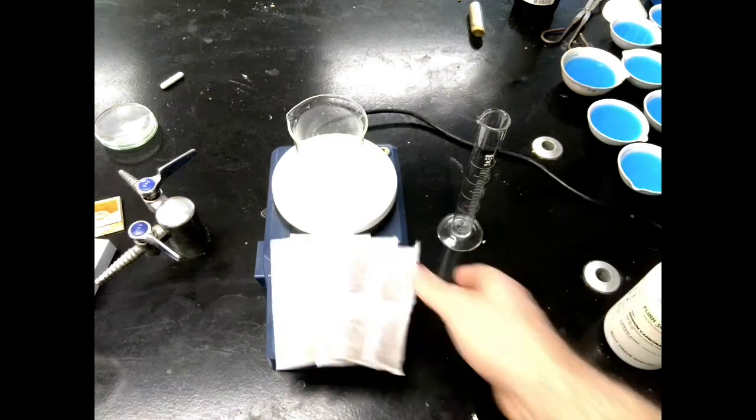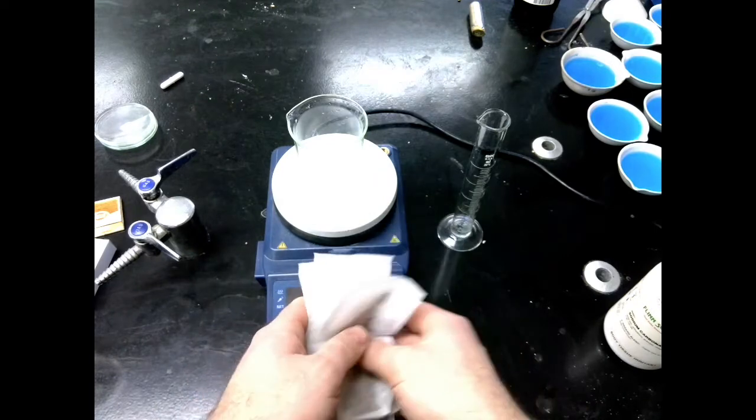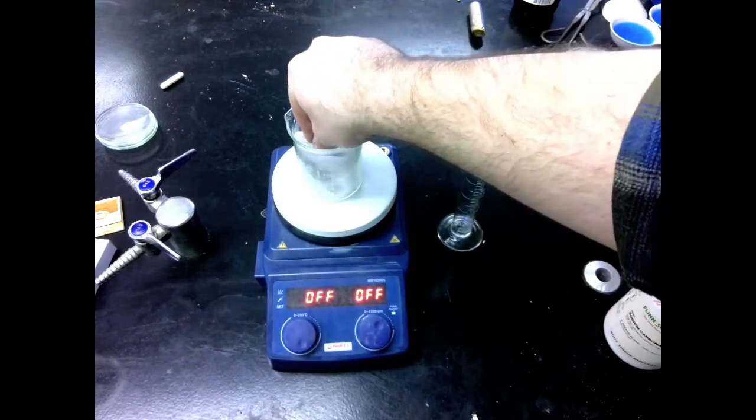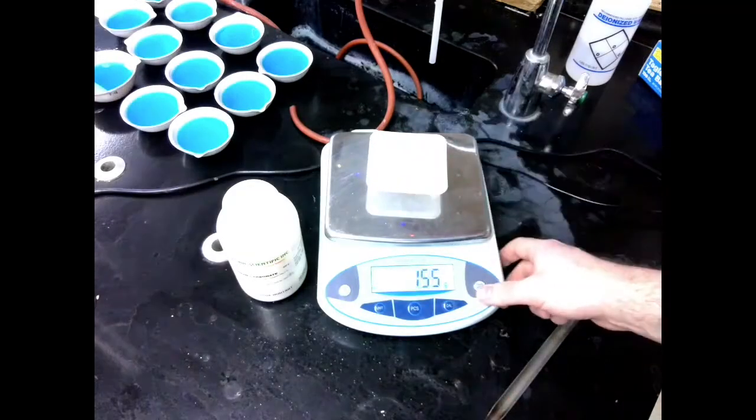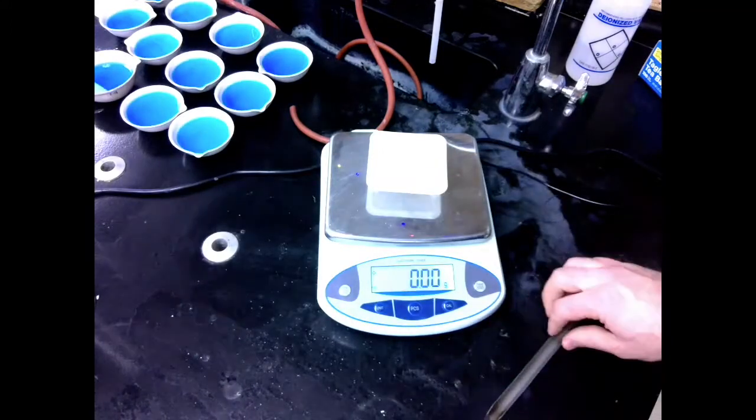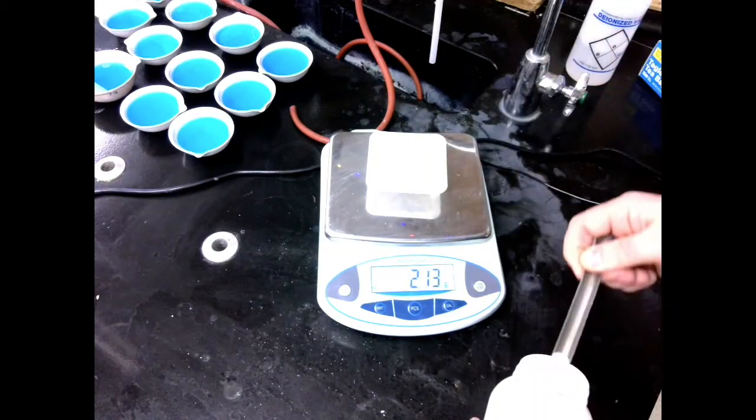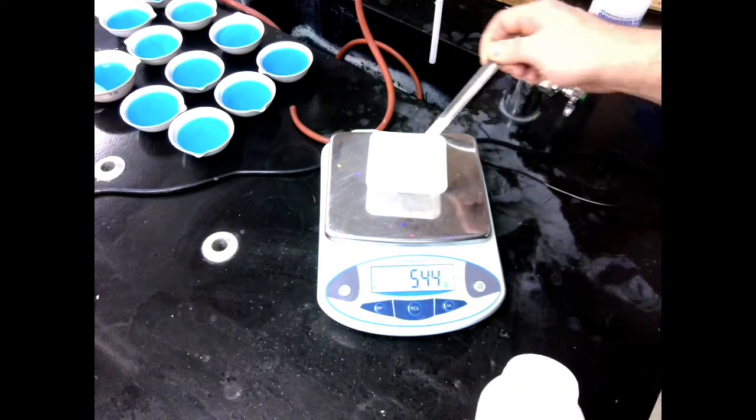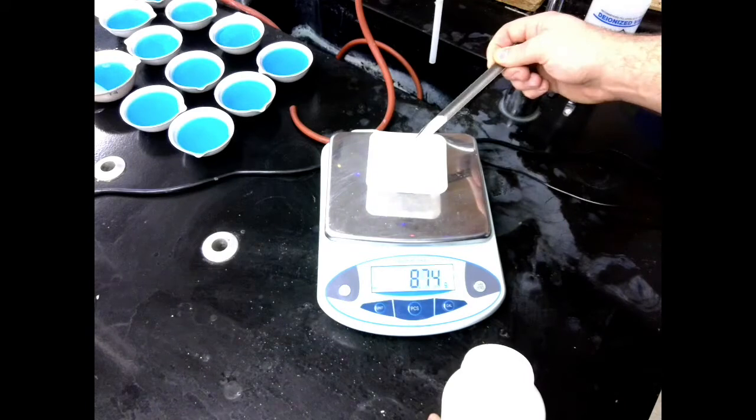Our first step is to get some teabags. We have 10 teabags here. We're going to put those all into a beaker, and then we need to measure out some sodium carbonate. We're going to measure out about 10 grams, so zero out our scale, and weigh out about 10. The sodium carbonate here is going to help everything that is not the caffeine stay suspended in the tea solution when we extract the caffeine.